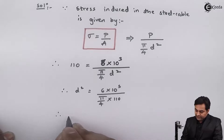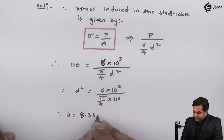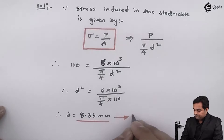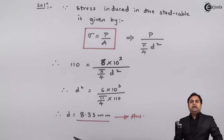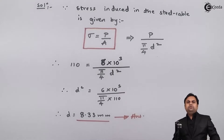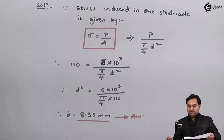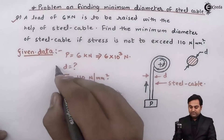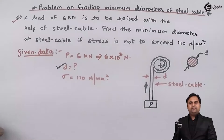Therefore D comes out to be 8.33 mm. This is the minimum diameter of the steel cable required to lift a load of six kilo Newton. The problem asked us to calculate the diameter of the steel cable, and we have found it to be 8.33 mm. With this we complete the problem.